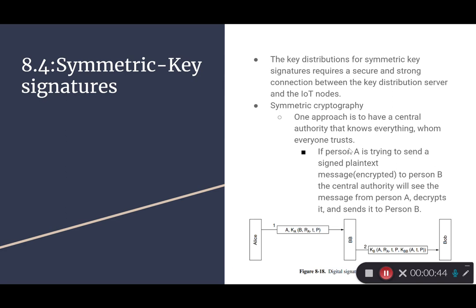For symmetric cryptography, one approach is to have a central authority that knows everything whom everyone trusts. If person A is trying to send a plain text message encrypted to person B, the central authority will see the message from person A, decrypt it, and send it to person B.